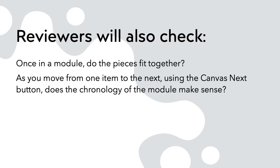Reviewers will also check: once inside a module, do the pieces fit together? As you move from one item to the next using the Canvas Next button, does the chronology of the module make sense? In other words, are you presenting information before doing an assessment on it, are you labeling whether something is content, and are you telling students they need to read something before they take a test on it? All the guesswork is taken out — students will know right away what they need to do so they can get started.